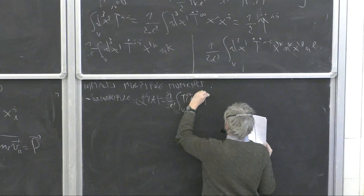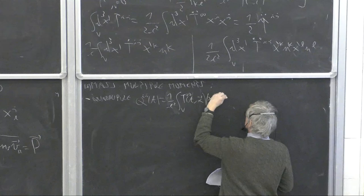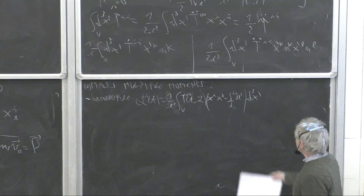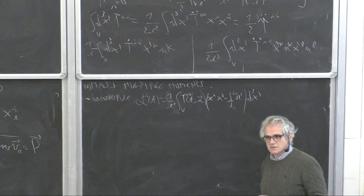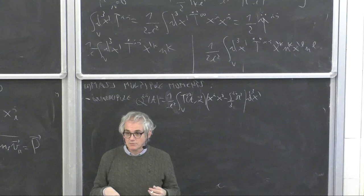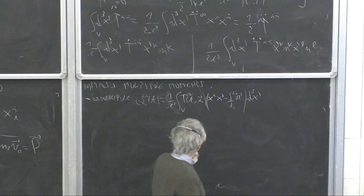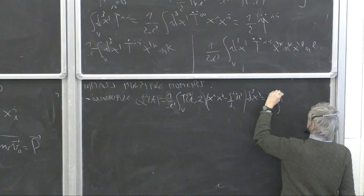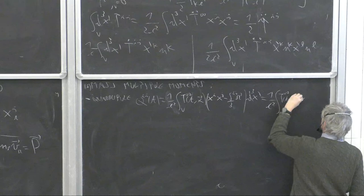The STF notation means we symmetrize and remove all traces. So x⟨i x_j⟩ = x_i x_j − (δ_ij/3) r². These are irreducible representations of the rotation group: under a rotation, the trace part is unaffected while the STF components mix among themselves.